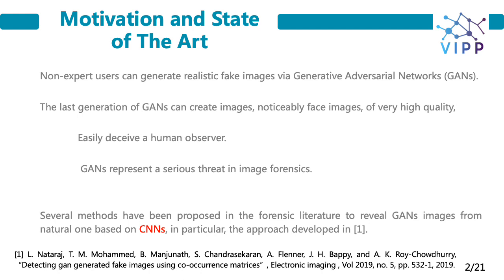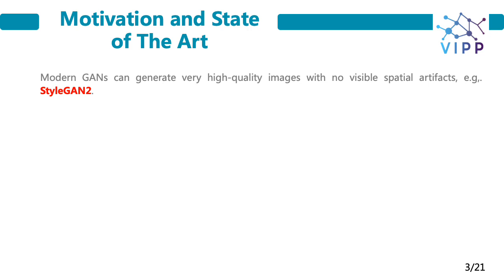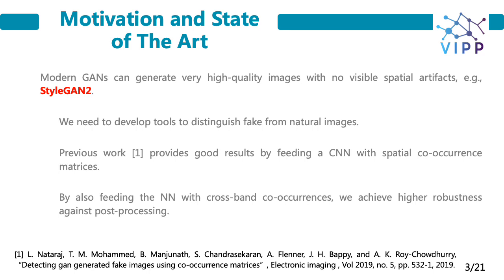Several methods have been proposed in the forensic literature to reveal whether an image has been generated by a GAN or is a natural one, based on CNNs, and can achieve very good performance. In particular, the approach of detecting GAN-generated fake images using co-occurrence matrices achieves very good detection accuracy by computing co-occurrence matrices from the three color image bands and inputting them to a CNN. However, modern GAN models can generate very high quality images with highly undetectable spatial artifacts, such as StyleGAN version 2. Therefore, we propose a method for distinguishing high-quality GAN-generated images from natural ones, exhibiting much better robustness against post-processing with respect to the intra-band method.